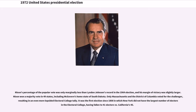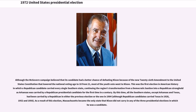Nixon's percentage of the popular vote was only marginally less than Lyndon Johnson's record in the 1964 election, and his margin of victory was slightly larger. Nixon won a majority vote in 49 states, including McGovern's home state of South Dakota. Only Massachusetts and the District of Columbia voted for the challenger, resulting in an even more lopsided Electoral College tally. Although the McGovern campaign believed the new 26th Amendment lowering the voting age to 18 would help, most of the youth vote went to Nixon. This was the first election in American history in which a Republican candidate carried every single Southern state, continuing the region's transformation from a Democratic bastion into a Republican stronghold, as Arkansas was carried by a Republican presidential candidate for the first time in a century.